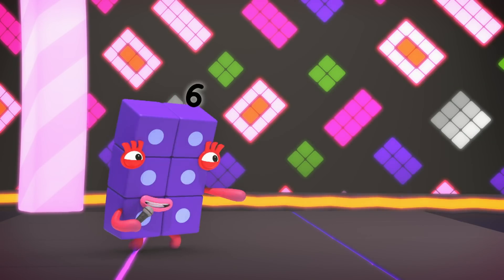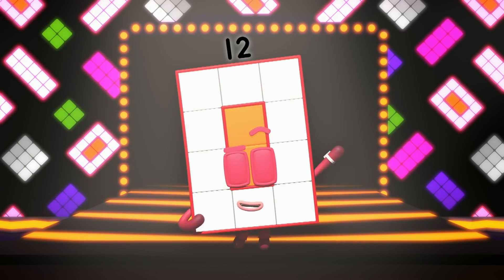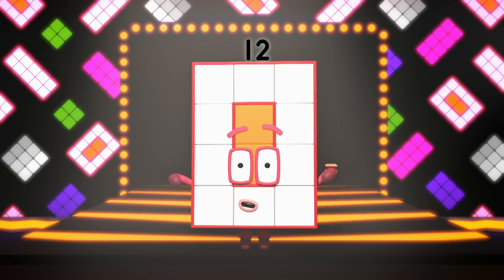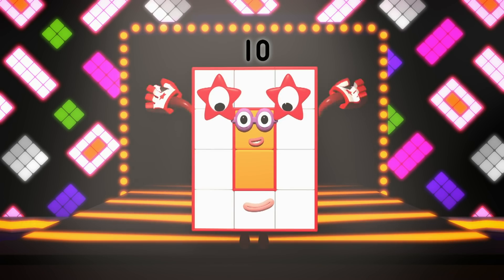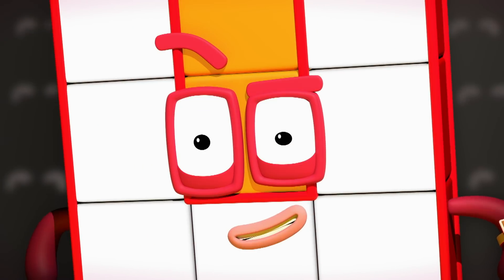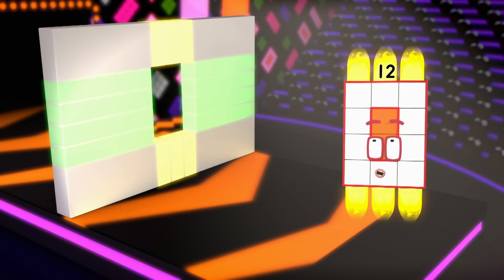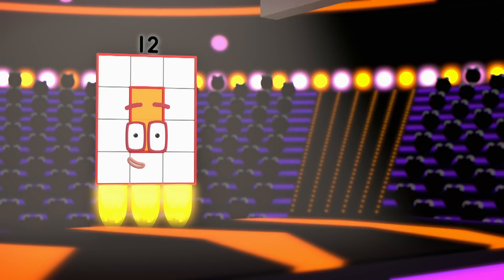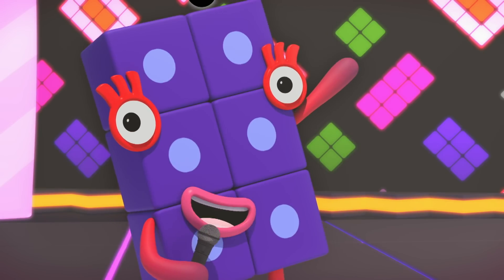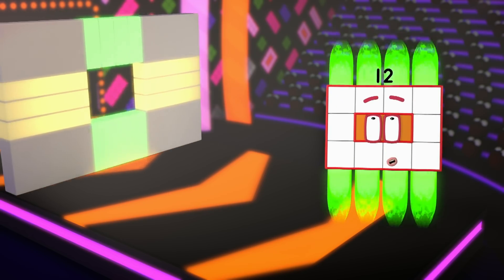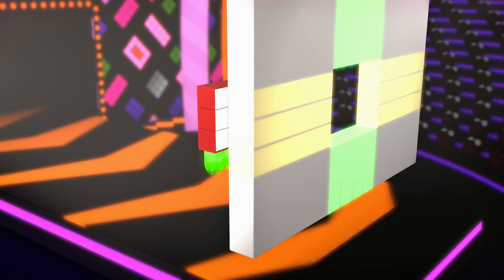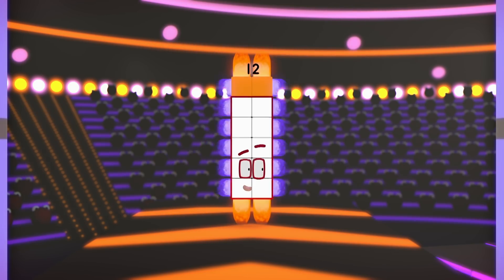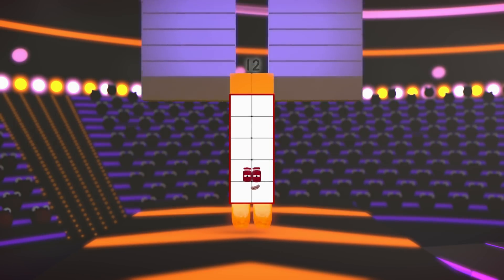I am 12. I am 10 and 2, and I am three blocks by four blocks. I am a rectangle. Oh, rectangle rings turn. I am four by three. Switch. I am two by six. Turn.